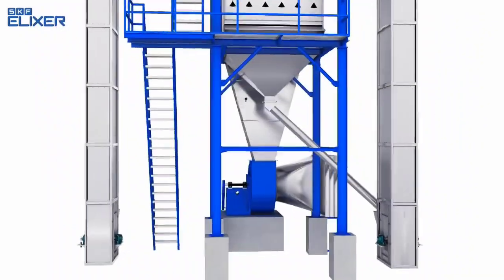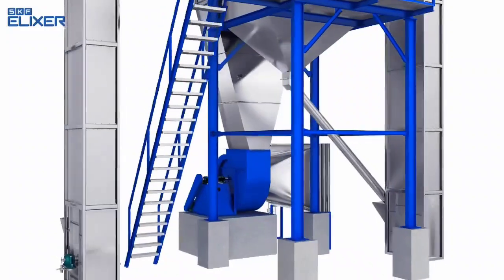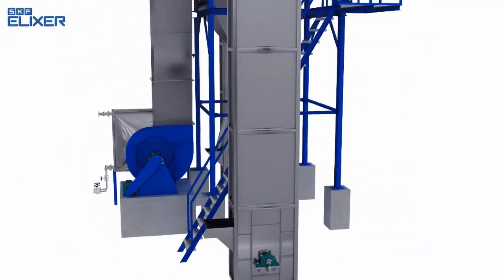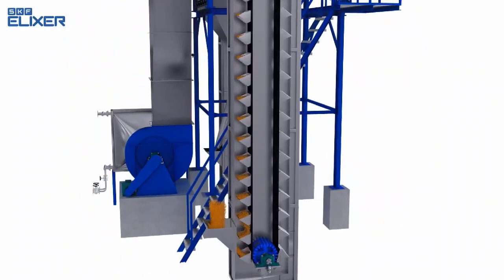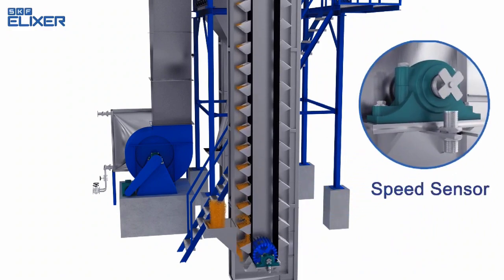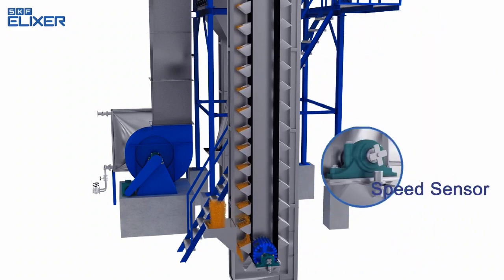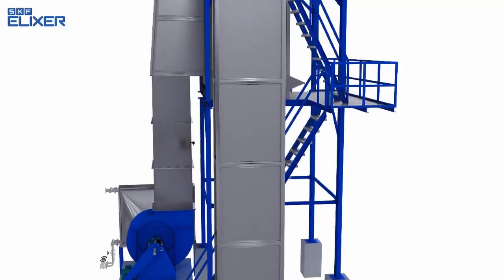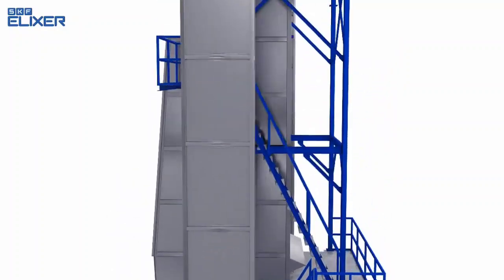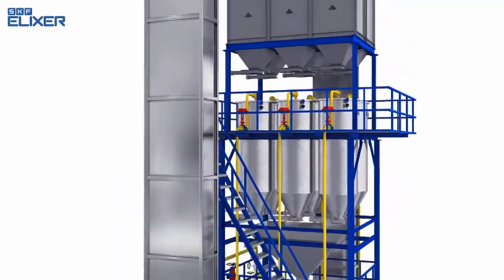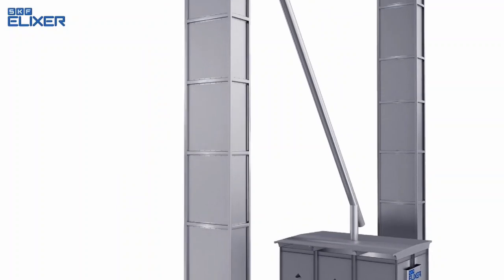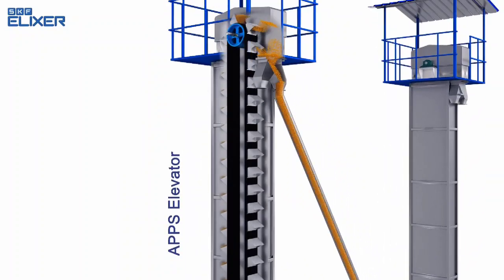Elevators are equipped with speed sensors and backstop arrangements. Speed sensors monitor the speed of the conveying system, helping to identify reasons for belt slacking. Paddy is moved through the belt conveyor and fed into the APPS elevator.